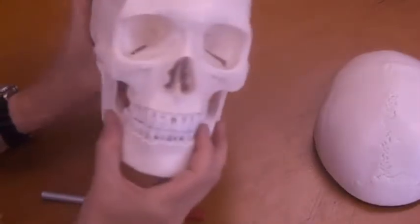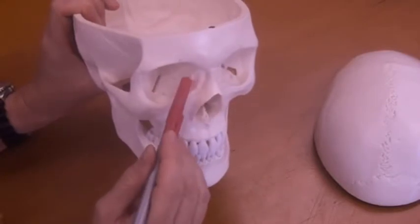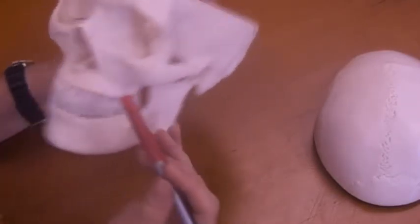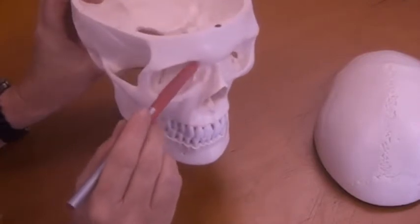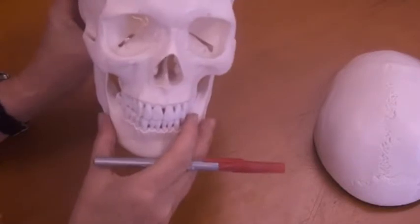We have two lacrimal bones, which are going to be just along the medial aspect of the orbital cavity. Small bones here and here. Those are lacrimal bones.